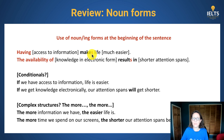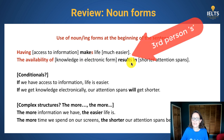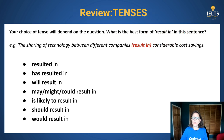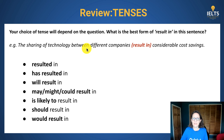The other thing you need to think about is tenses — this all depends on the question. What is the best form of 'result in' in this sentence? 'The sharing of technology between different companies' — that's the verb 'result in considerable cost savings.' You could use all of these. Pause the video, examine each one and tell me what tense they are.